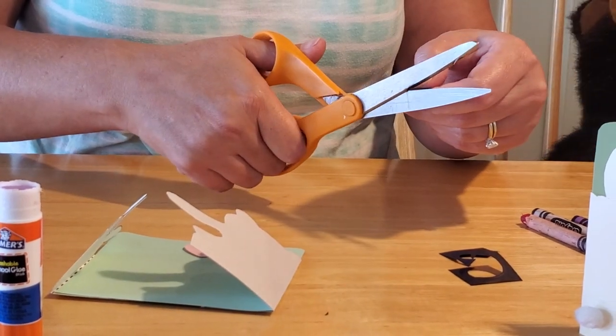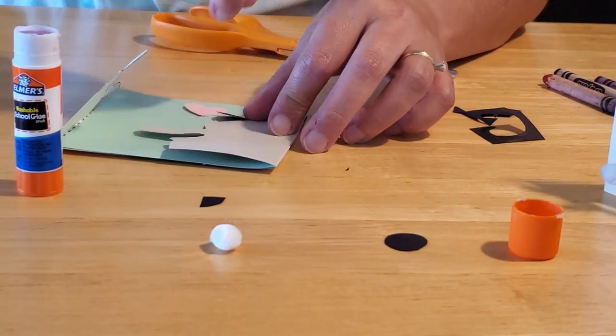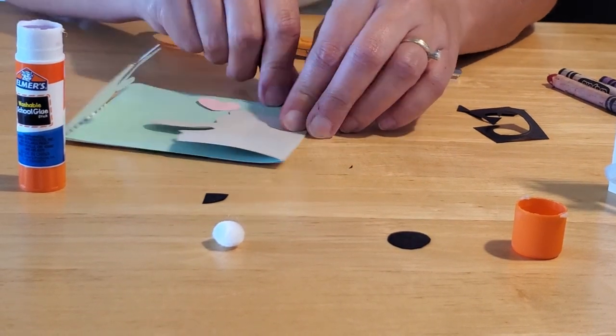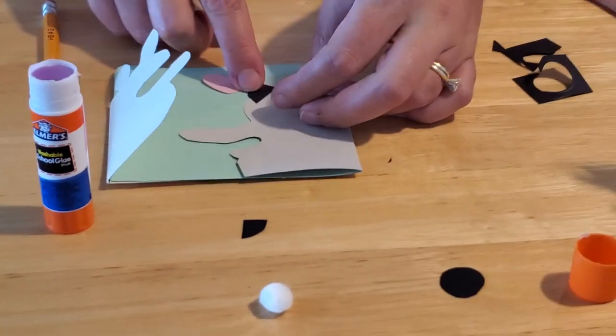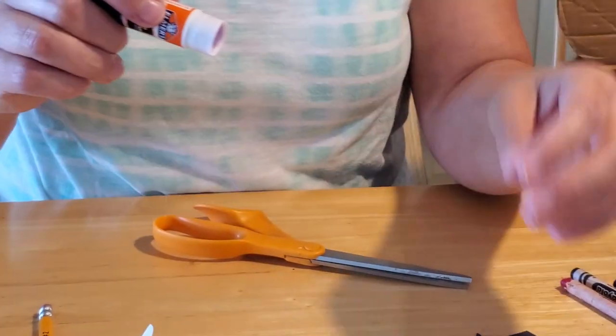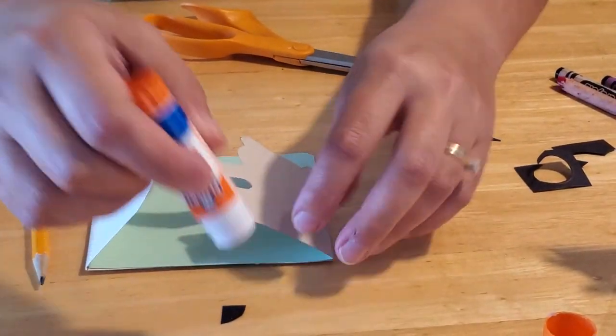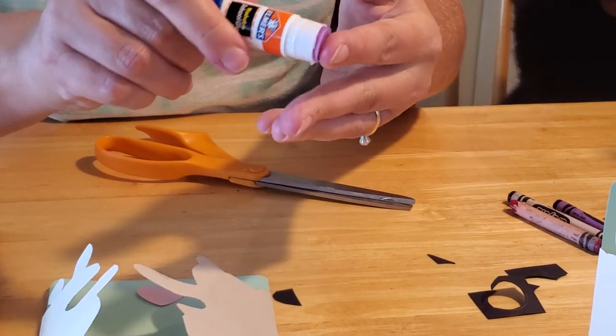And then we simply will glue, oops, I got it upside down. We'll just glue the ear on our bear. So we'll take our ears, here they are, and we'll put a little bit of glue on here.